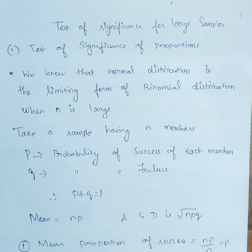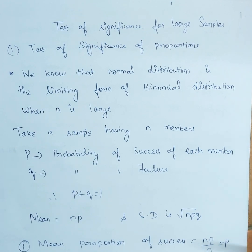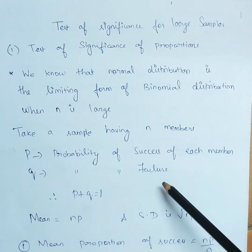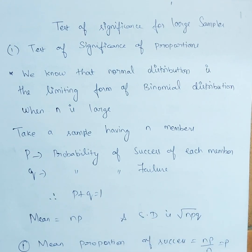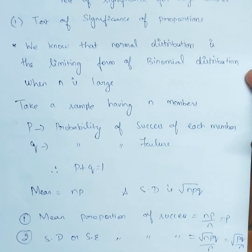We know that the normal distribution is a limiting form of binomial distribution when n is large. Here we take a sample having n members. If p is the probability of success of each member, then q will be the probability of failure, and we know that p plus q equals one, with mean np.